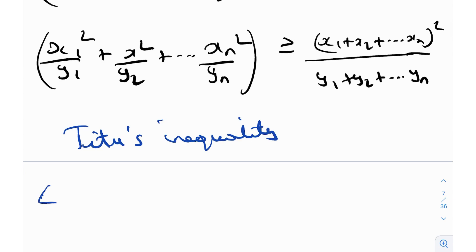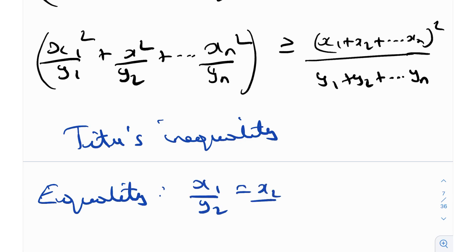The equality case for Tito's is the same as Cauchy-Schwarz: x₁/y₁ = x₂/y₂ = … — all ratios equal one another. So keep in mind both Tito's inequality and the general Cauchy-Schwarz inequality.